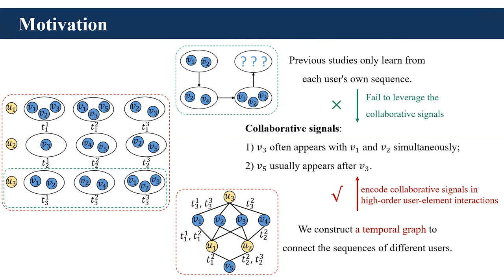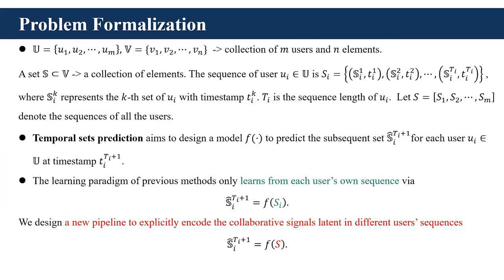Now let's give the formalization of the problem. Given a sequence of sets SI that records the historical behaviors of user UI, temporal set prediction aims to predict the next set of UI according to the given sequence. Previous methods only take SI as input, which is the user's own sequence. Different from existing methods, we design a new pipeline to encode the collaborative signals in different user sequences, and we take the sequences of all users as input.